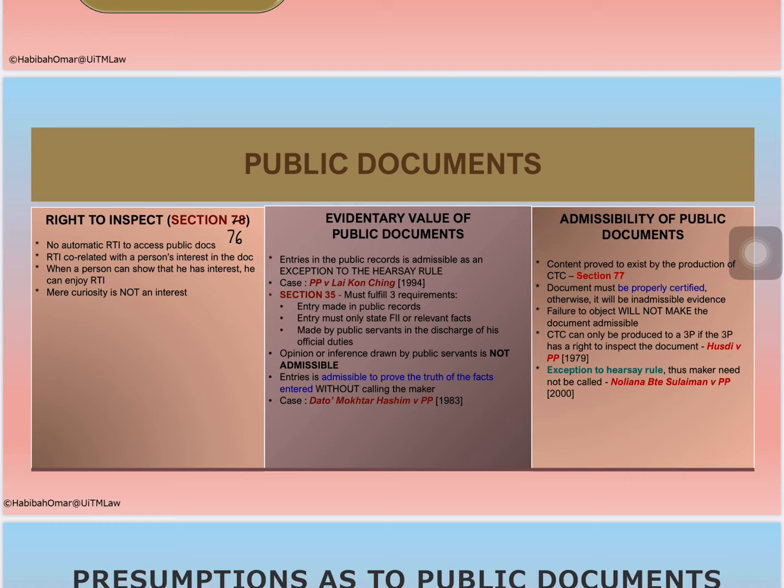Remember, the document can only be a public document if it satisfies the definition of section 74, and the entry must be made pursuant to section 35 of the Evidence Act. Section 35 deals with the relevancy of entry in public records made in performance of duty. An entry in any public or official book, register, or record stating a fact in issue or relevant fact, made by a public servant in the discharge of his official duty or by any person in performance of a duty specifically enjoined by law, is itself a relevant fact.